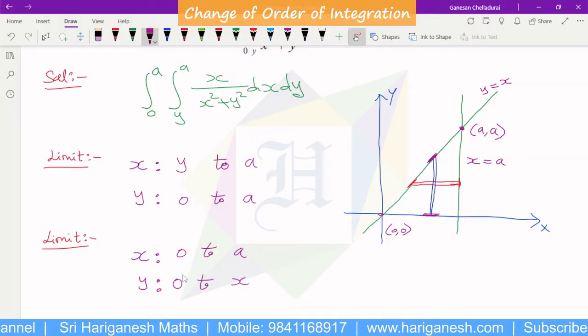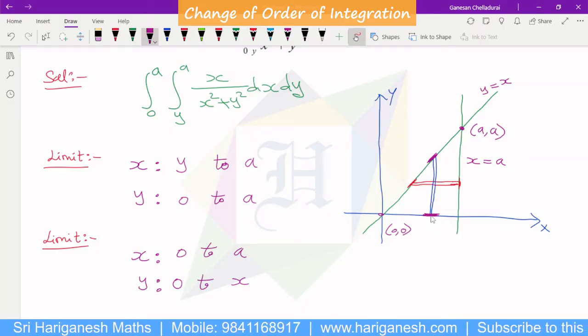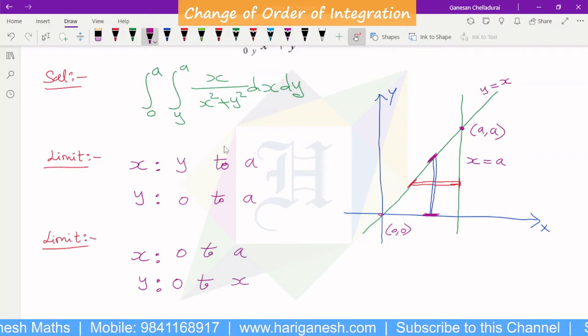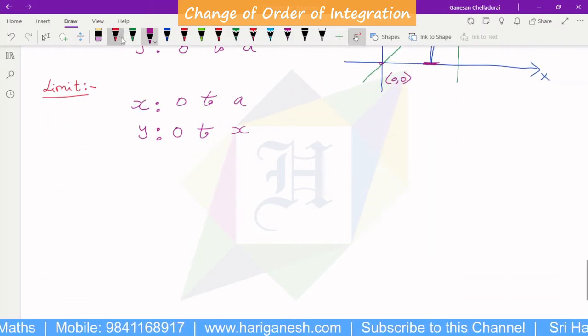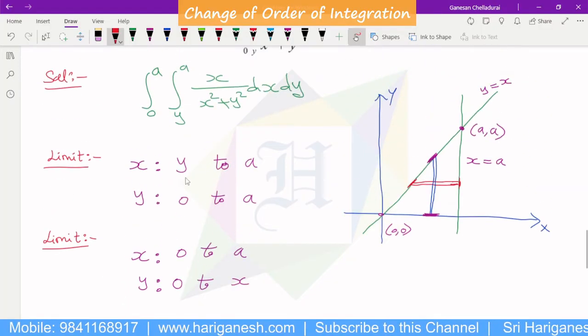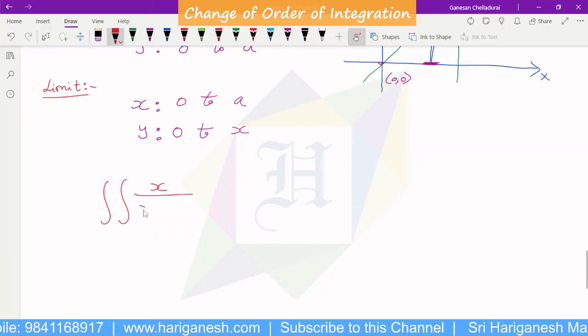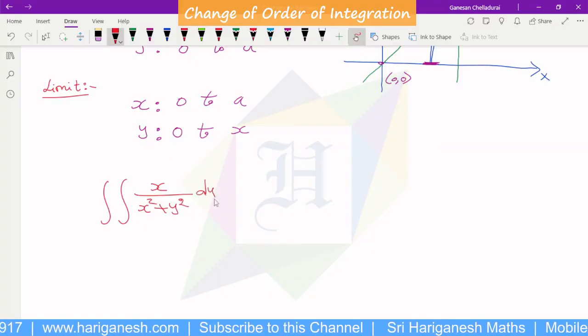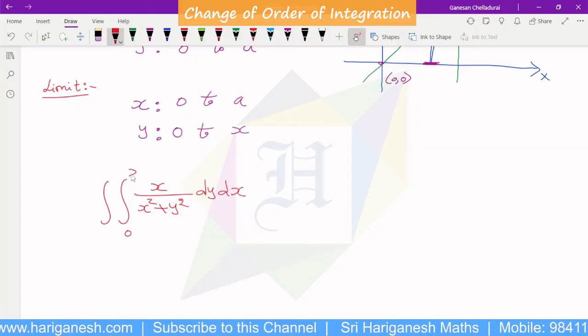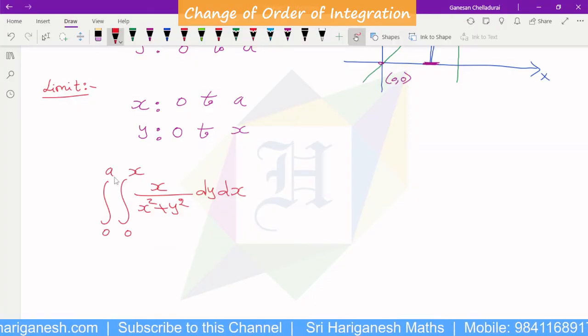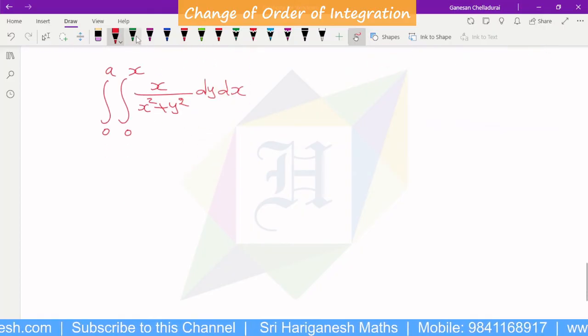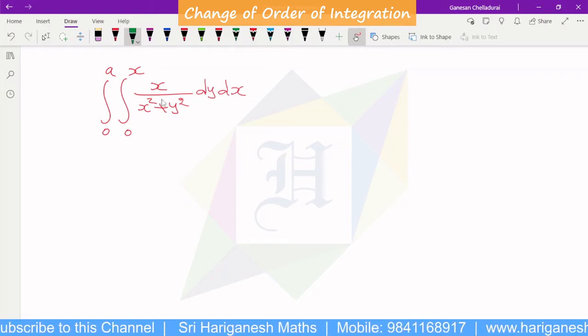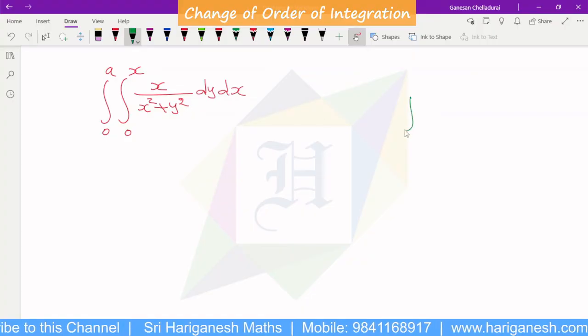So vertical strip: y is equal to 0 and the straight line y is equal to x. So in the new limit, the integral is evaluated. The integral is double integral of x by x square plus y square.